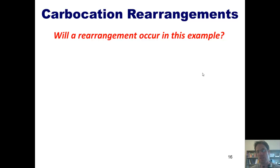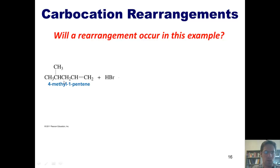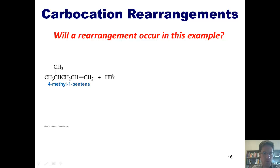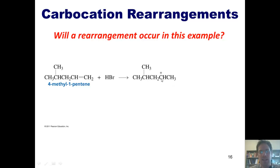Let's see if you can answer this question: will a rearrangement occur in this example? I've got this molecule reacting with HBr. Mechanistically, these electrons are going to come out and attack the hydrogen, breaking the hydrogen-bromine bond and releasing free bromide. The hydrogen bonds with the carbon to the right to generate the more stable secondary carbocation intermediate. Will a rearrangement occur? What we have to do to answer that question is look next door. Is there a methyl on the carbon to the left or to the right of this carbocation? The answer is no.